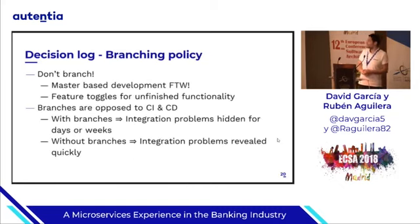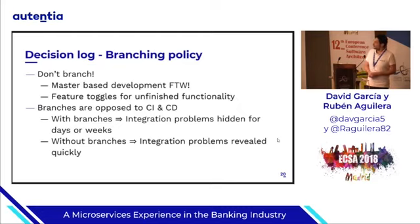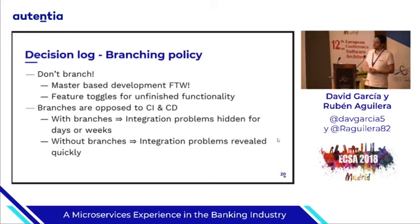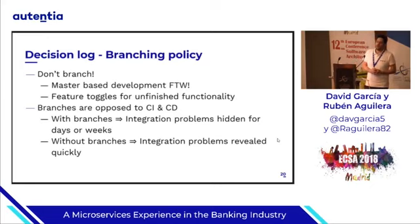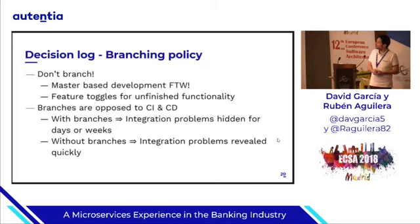A top decision could have been the branching policy, but we decided to avoid the discussion just by enforcing a no-branches policy — that is, trunk-based development. Why? Well, if you think of the continuous integration process as a feedback loop, then with branches you get slow feedback, because you only notice problems when you merge branches. Without branches, integration problems are revealed very quickly as soon as you try to push code to the Git repository, and therefore you have a much faster feedback. How do we deal with unfinished functionality? We deactivate the unfinished code paths with feature toggles.